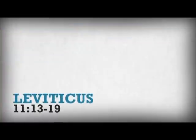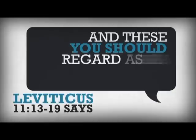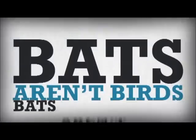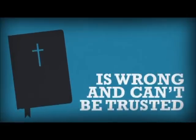For instance, Leviticus 11, 13 through 19 says, And these you should regard as an abomination among birds. The eagle, the vulture, buzzard, and bat. Folks go nuts on this one. Bats aren't birds. Bats aren't birds. The Bible is wrong and can't be trusted.